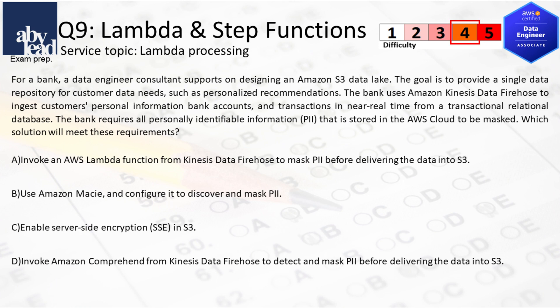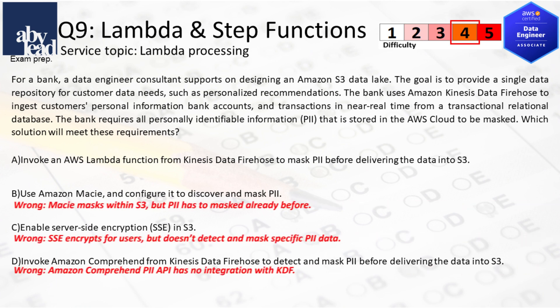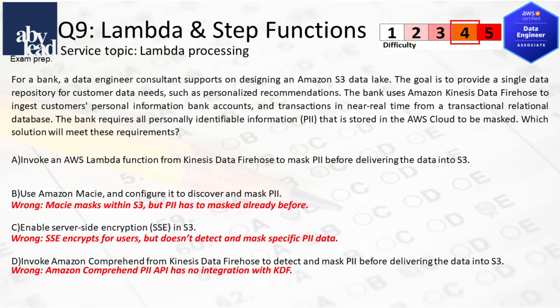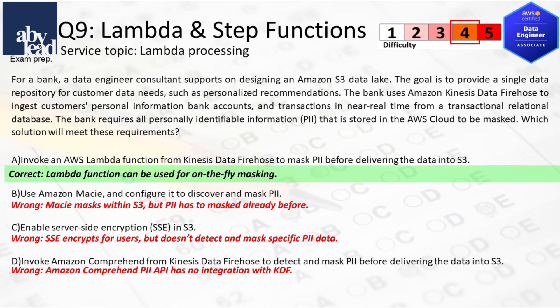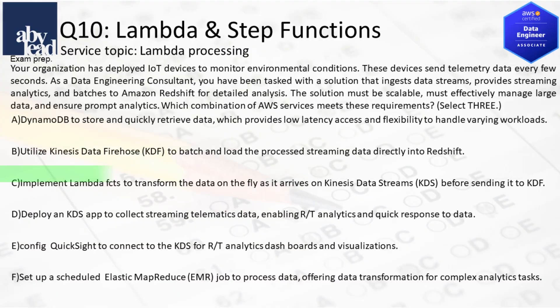Question 9: How do you mask private near-real-time data before storing it in an S3 data lake? Wrong is to mask private data upfront with Macie, and server-side encryption doesn't handle private data masking. Not better is to integrate Amazon Comprehend API with Kinesis. In contrast, you can apply a Lambda function for on-the-fly masking.